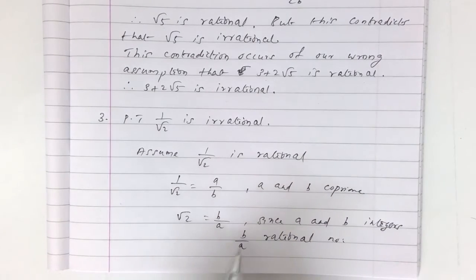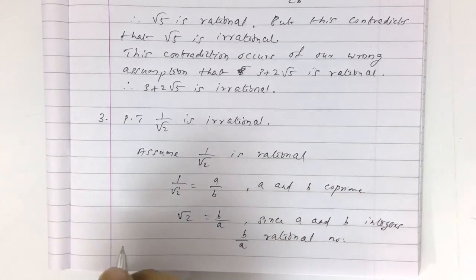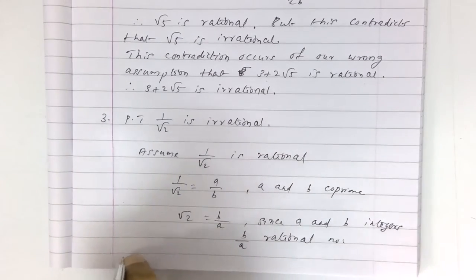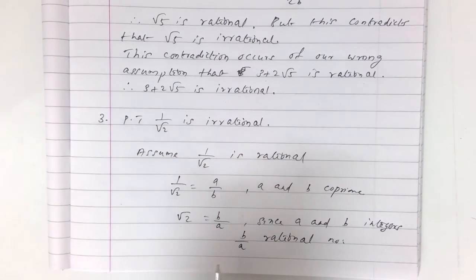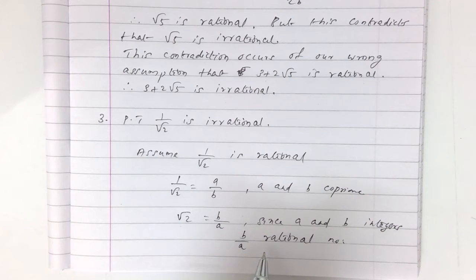But B by A is equal to root 2. That means root 2 is a rational number. But this contradicts the fact that root 2 is irrational.